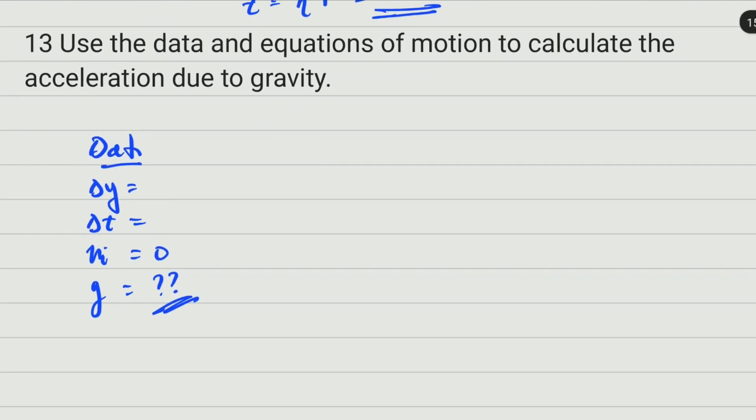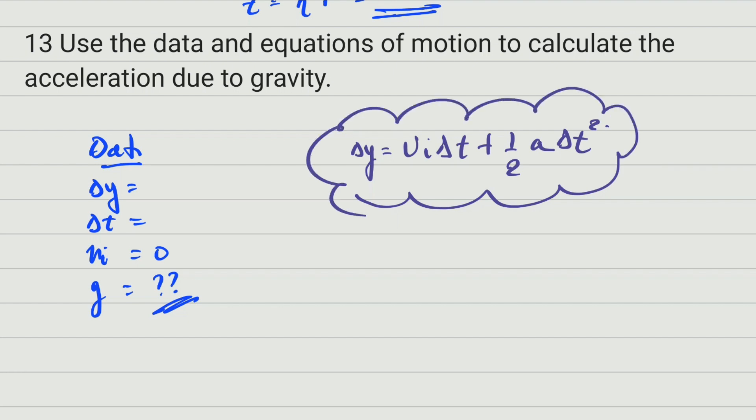According to this data, the formula we're going to use is: displacement = initial velocity × time + ½ × acceleration × time². This is the formula we'll use when we get all the results.